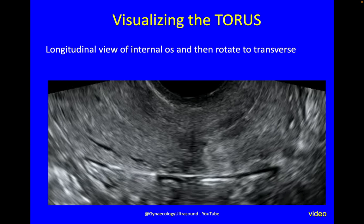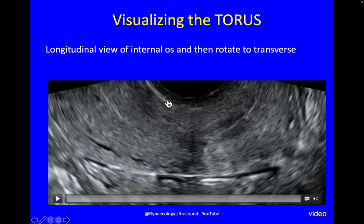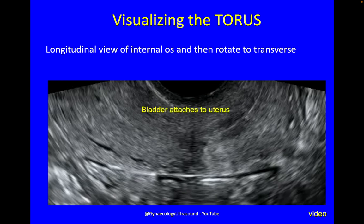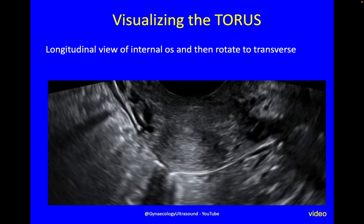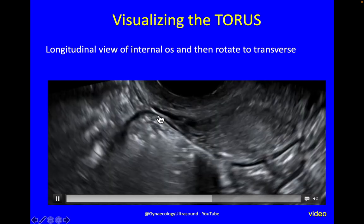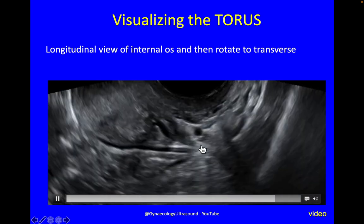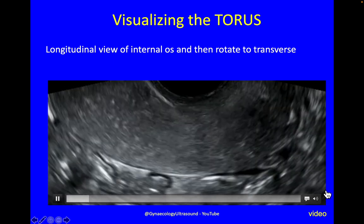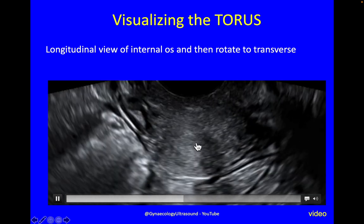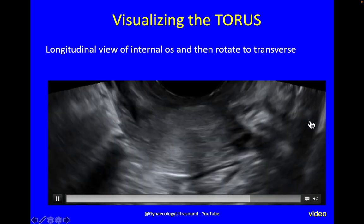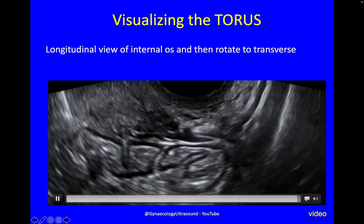How do you do that on ultrasound? Longitudinal view of the internal os — line it up with that bit of whiteness there. The torus is here. If I then rotate to the transverse plane, you can see the uterosacral ligaments where they insert. Going side to side to make sure I'm at the right level, then going transverse: the internal os is there, the torus is here, and this fine white line is the uterosacral ligament, and the same on the other side. Normal ligaments are very difficult to see, but abnormal ligaments are very easy to see. Here are normal uterosacral ligaments both sides with nice free mobility of bowel.